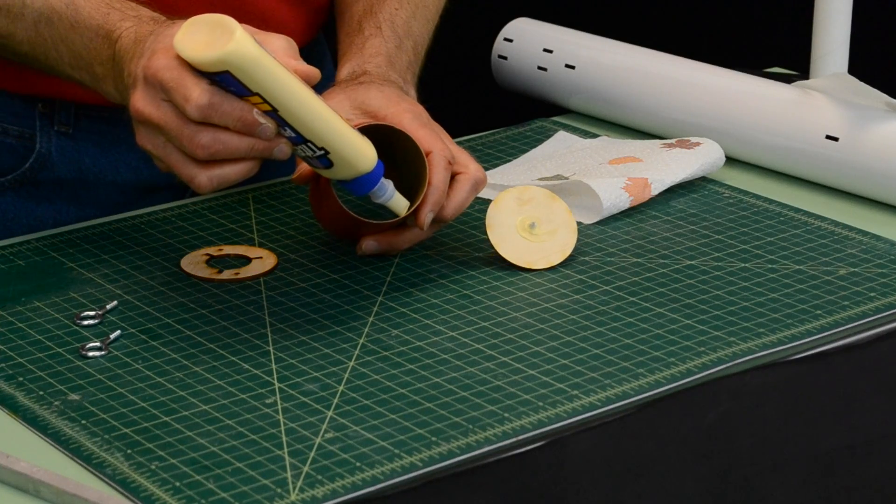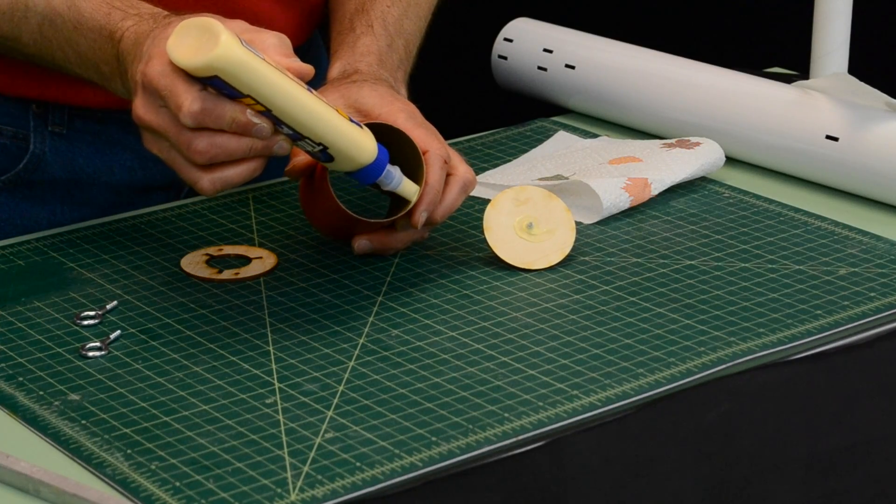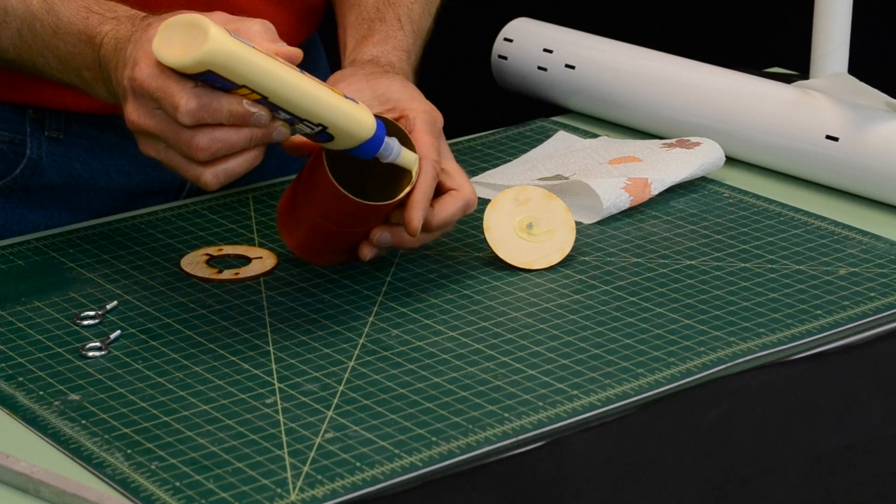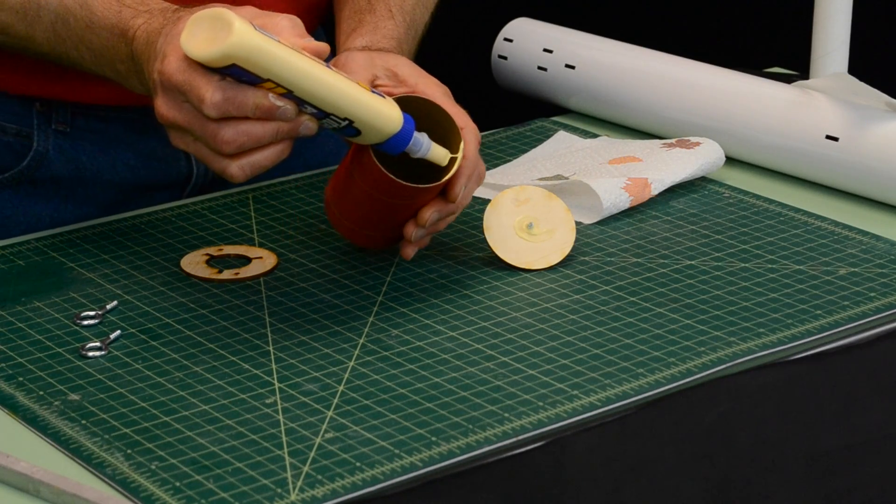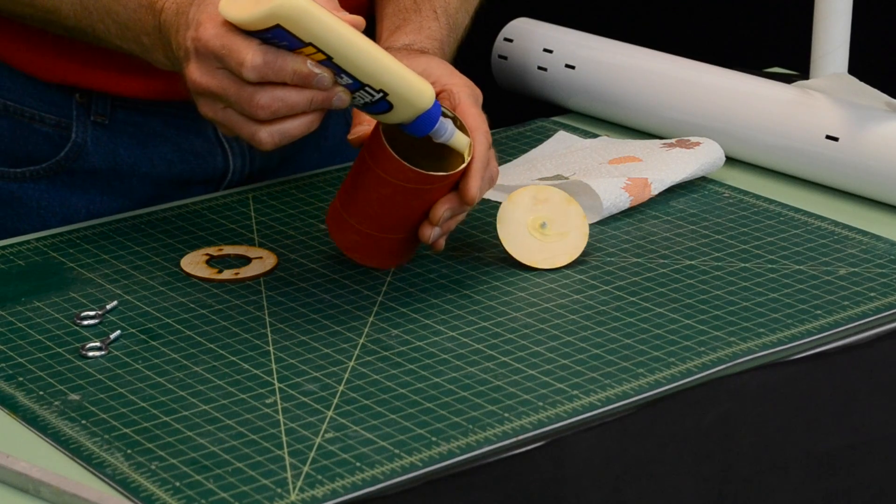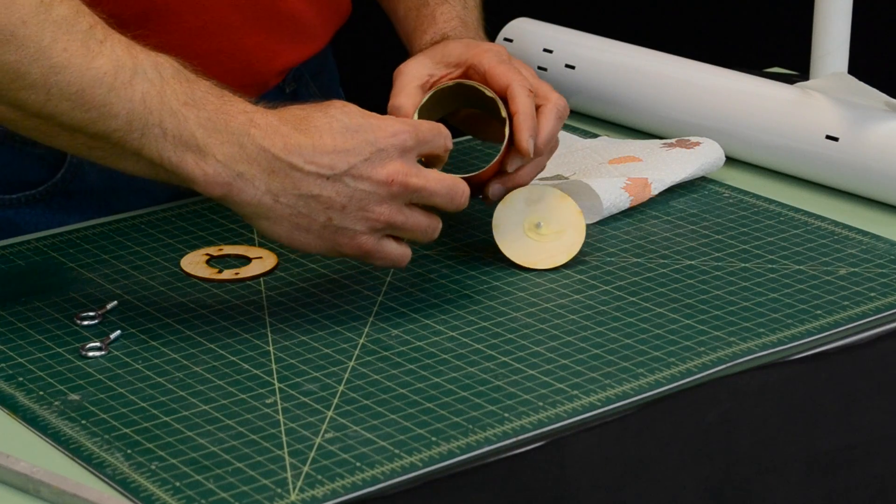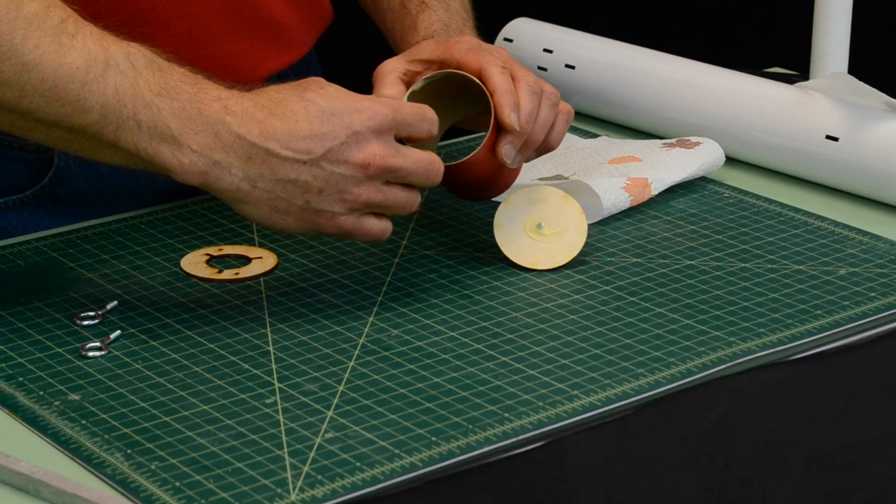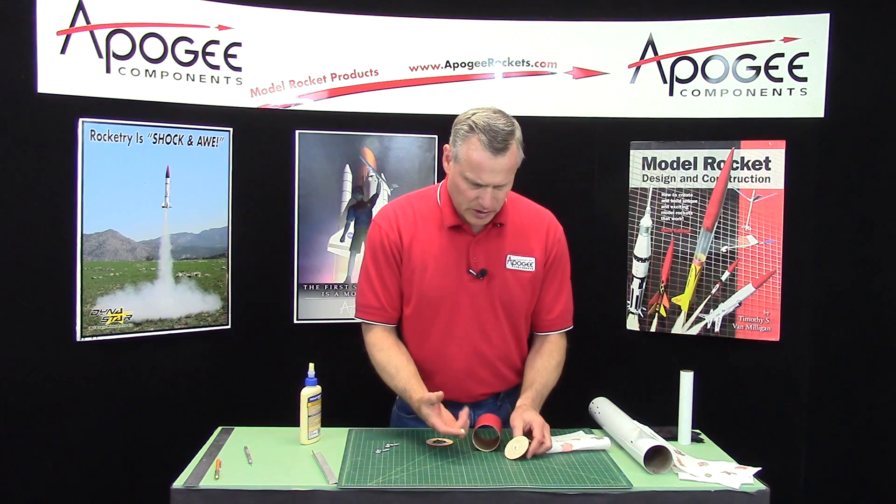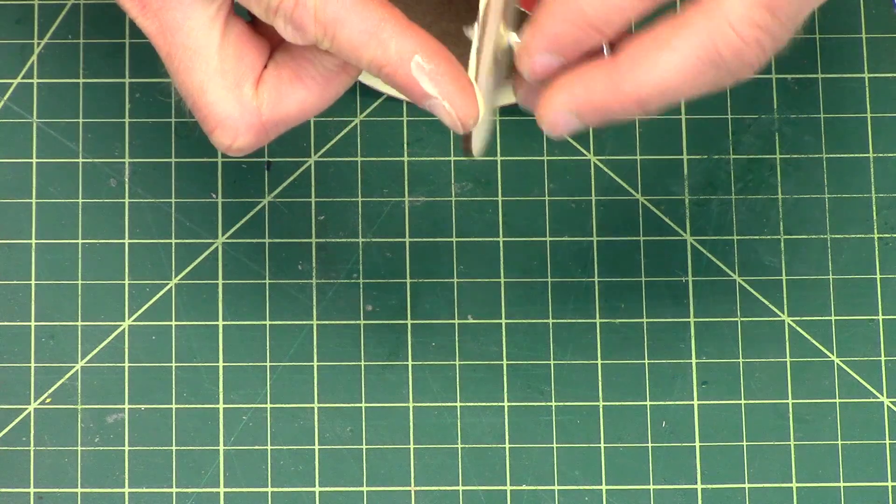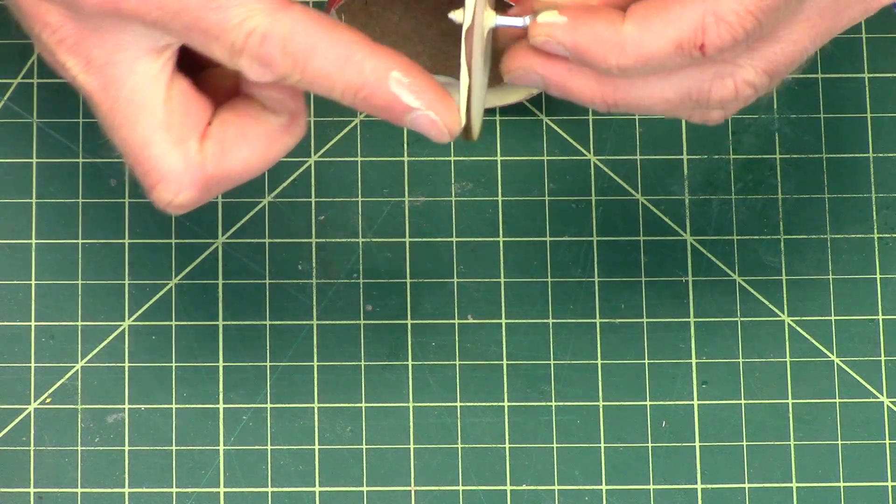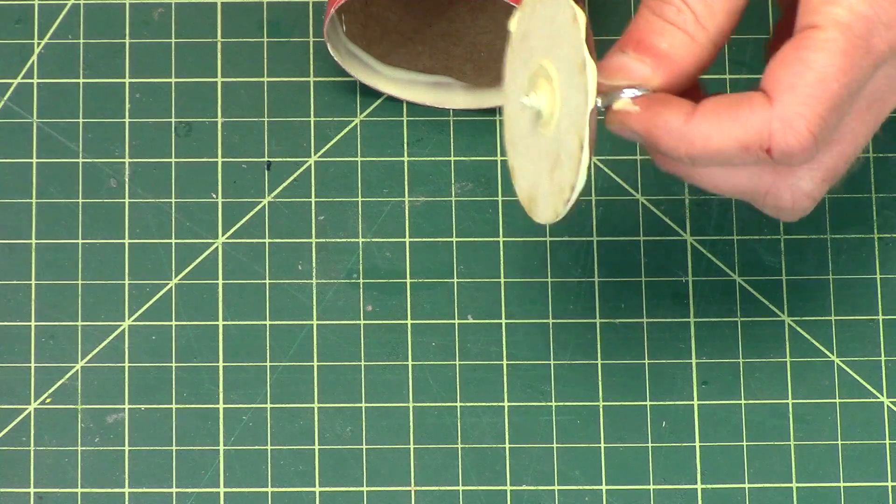I want to let this glue dry before I glue the coupler into the body tube. So I'm just going around the perimeter here on the inside with some glue. I'm going to spread it around. Take the excess and put it on the outside of the bulkhead.